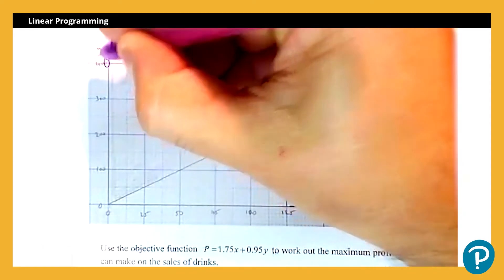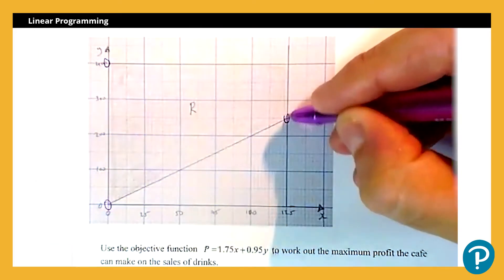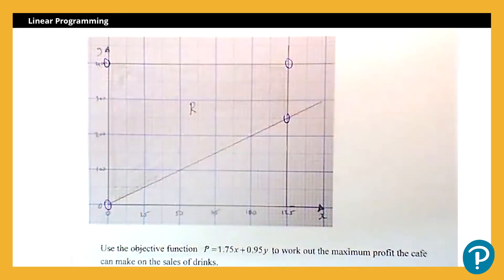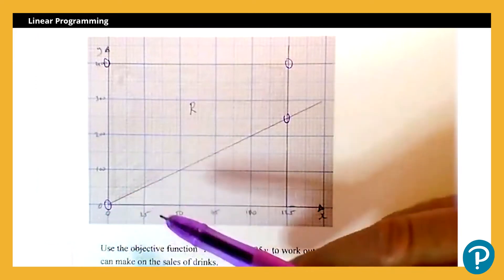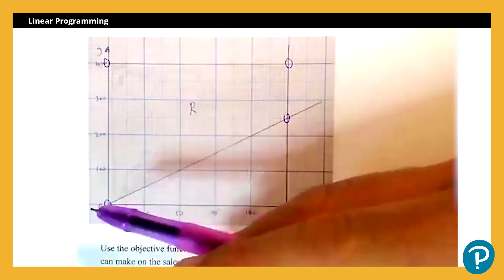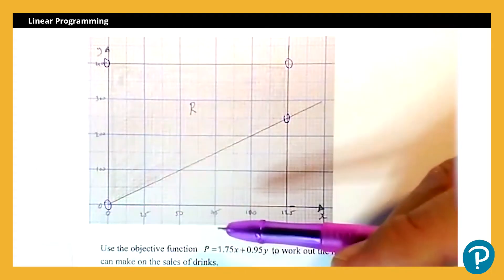So we've got these points here, four of them. Now obviously selling no drinks whatsoever is not going to make me any money, so we can discount that one. In this case, if we're minimizing it might be that this point comes into play, but here we're maximizing the profit.